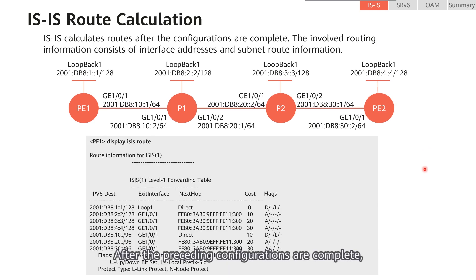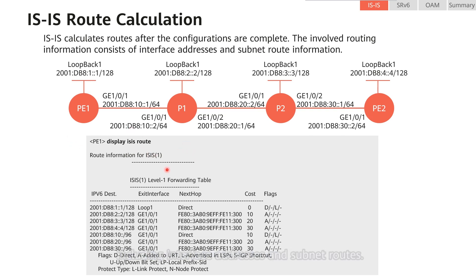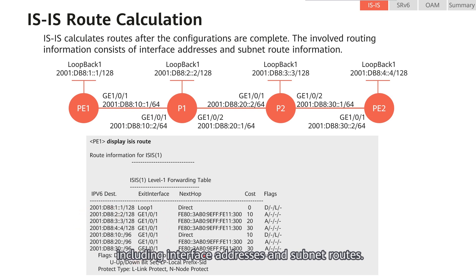After the preceding configurations are complete, IS-IS calculates routes. You can run the display IS-IS route command on P1 to check all routing information, including interface addresses and subnet routes.